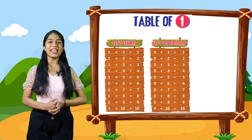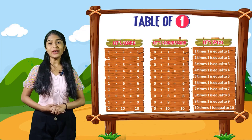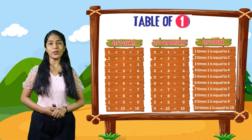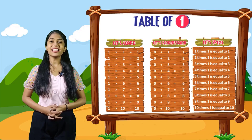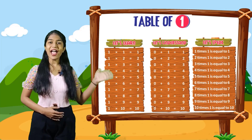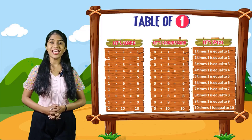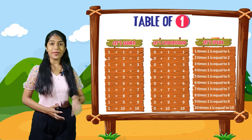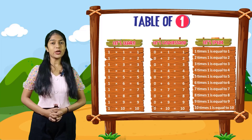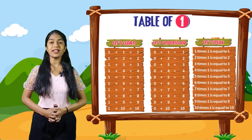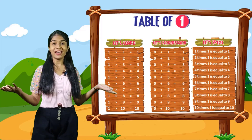So let's see. 1 times 1 is equal to 1. 2 times 1 is equal to 2. 3 times 1 is equal to 3. 4 times 1 is equal to 4. 5 times 1 is equal to 5. 6 times 1 is equal to 6. 7 times 1 is equal to 7. 8 times 1 is equal to 8. 9 times 1 is equal to 9. 10 times 1 is equal to 10.